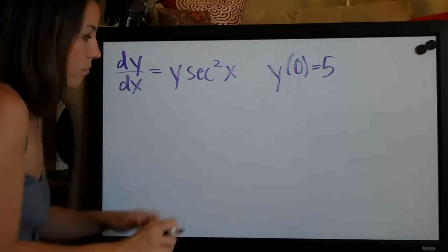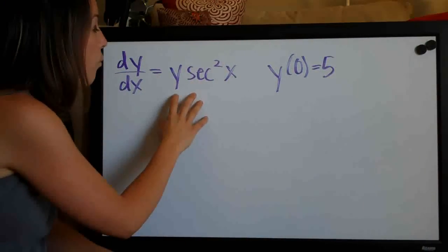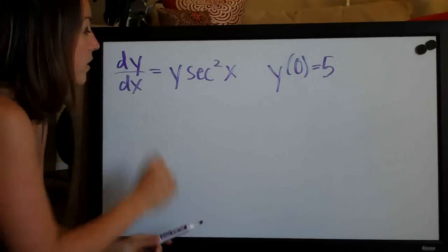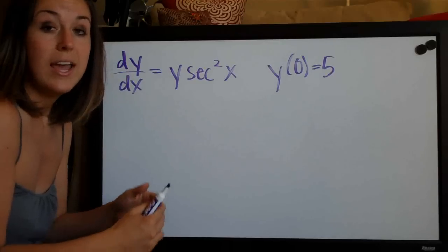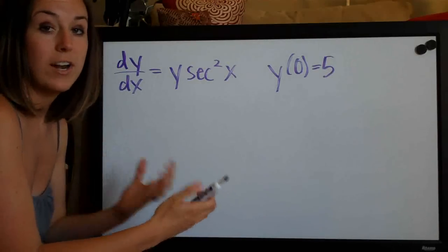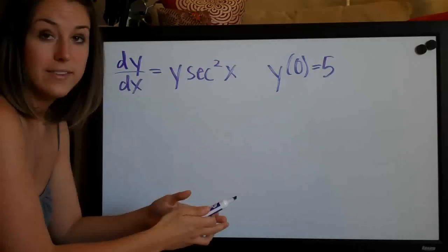So this is going to be a separable equation because we have one of y and x on the right side as well as the left. So as with any initial value problem, the first thing that we're going to need to do is separate the variables. We're going to try to get the y's on the left side and the x's on the right side.